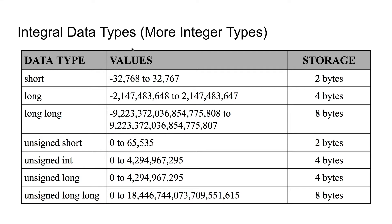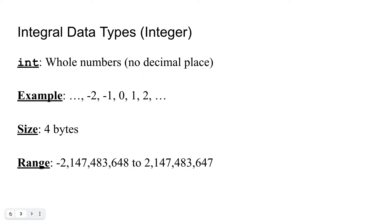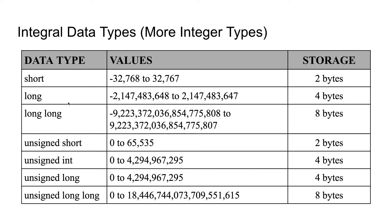There are a few other types of integers you can use in your programs. There is short, which is only 2 bytes and goes from negative 32,000 to 32,000 in range. These are mainly used if you only need smaller values. The next one is long, which is the same as an integer, and isn't used as much anymore. But there is long long, which has a range of negative 9 quintillion to 9 quintillion and is stored in 8 bytes of memory, which is why it can hold such large numbers.